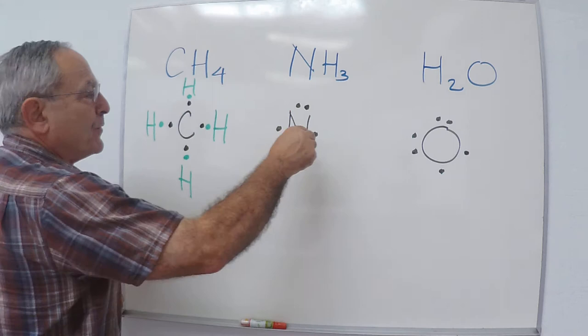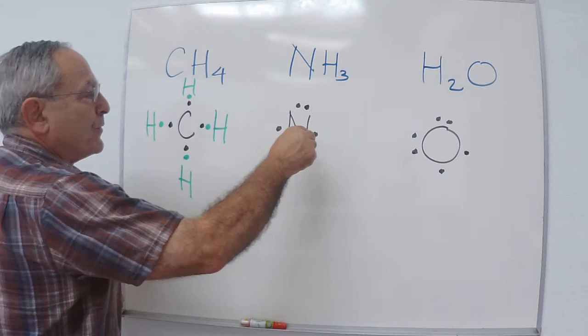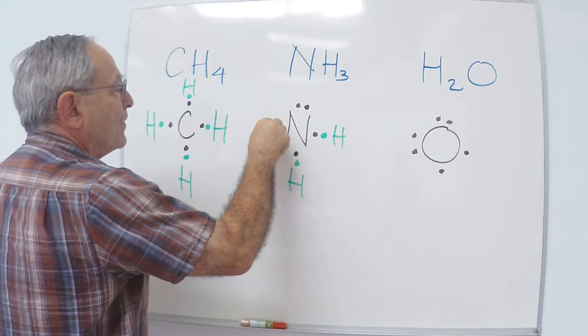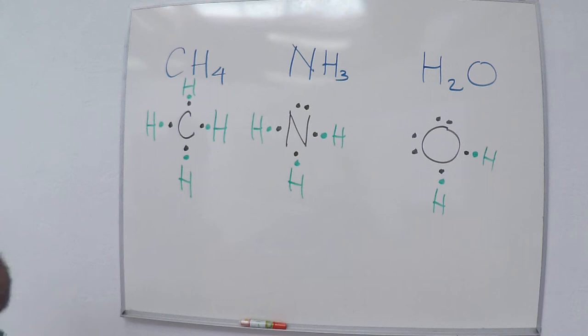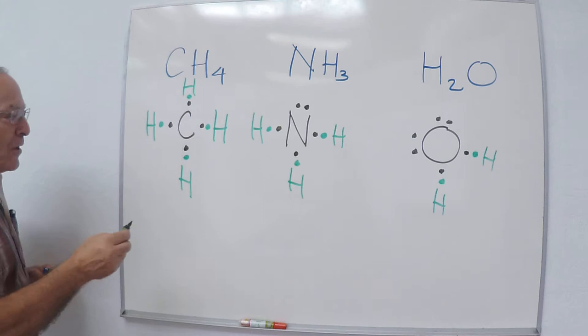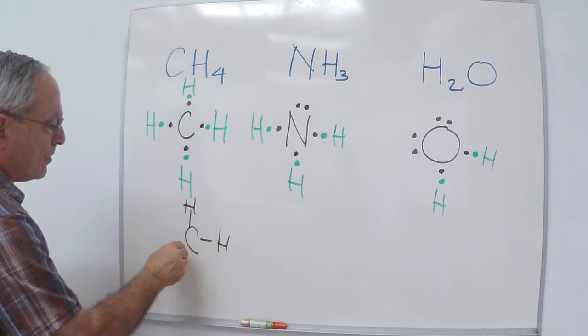NH₃, we do the same thing, create the bonds between the nitrogen and the hydrogen. And finally, with oxygen, we have two hydrogens bonded to the oxygen in water. Now, we also converted these dot structures into line structures. If we play connect the dots, each pair of electrons is represented by a line. Each line is called a chemical bond, a shared pair of electrons.